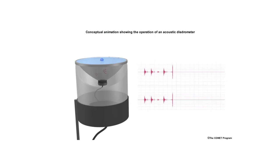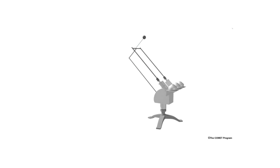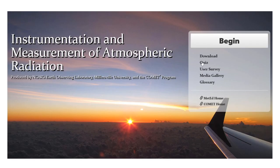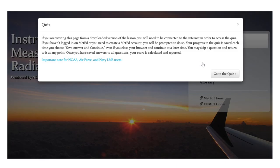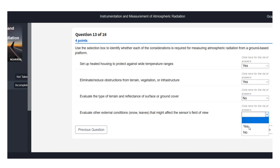Original animations help illustrate measurements of precipitation, wind, atmospheric radiation, and other variables. Each lesson also includes a pre and post test, as well as booster or follow-up questions to help improve learning retention.